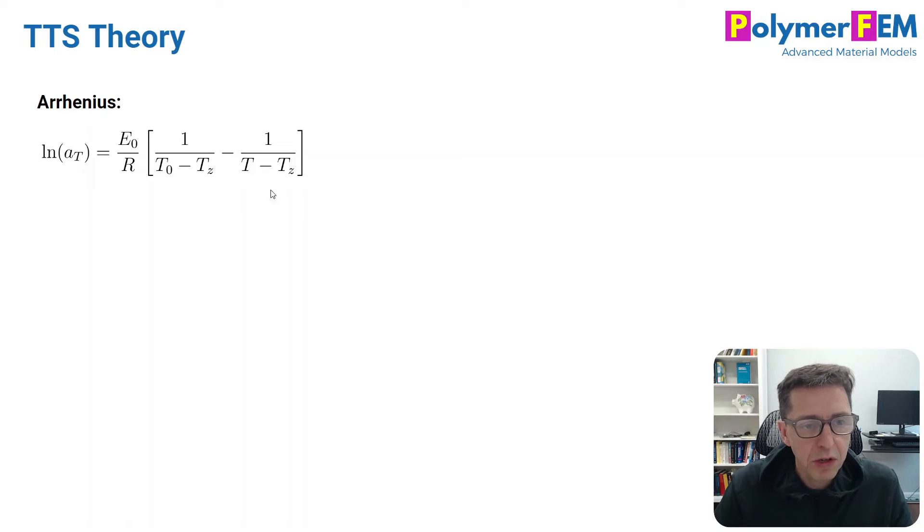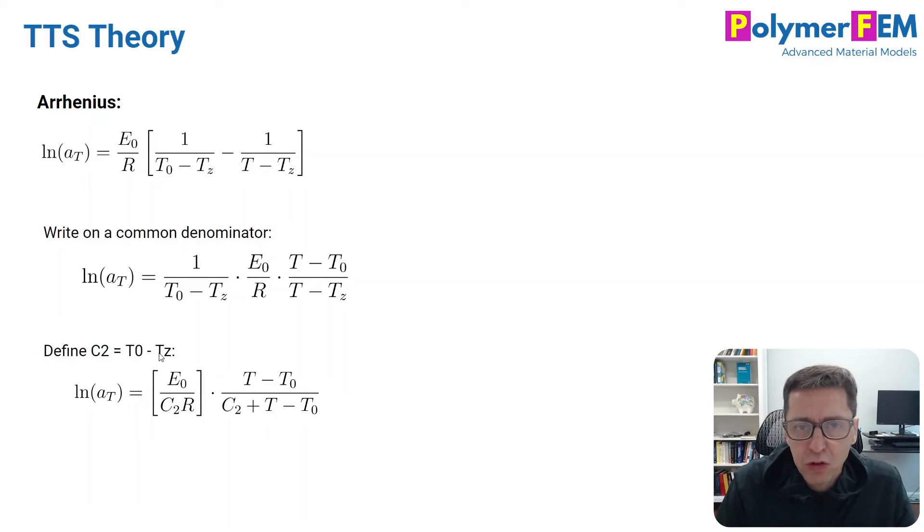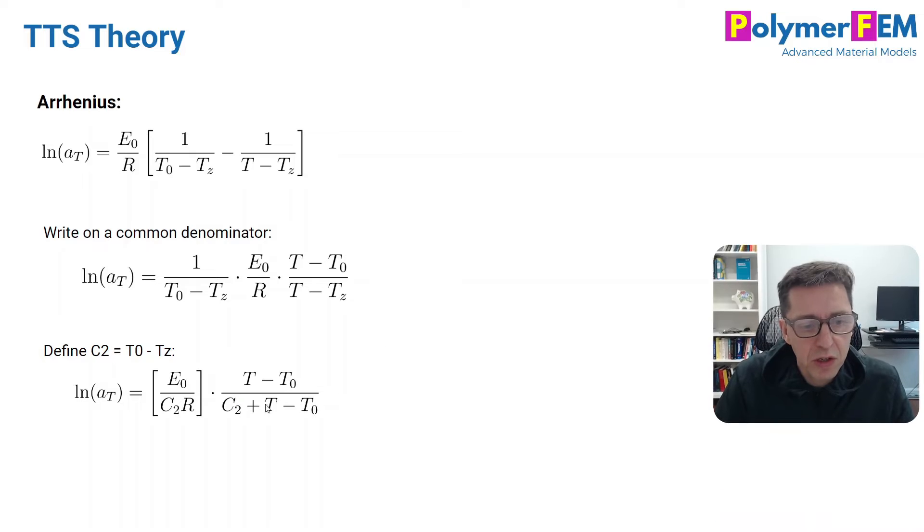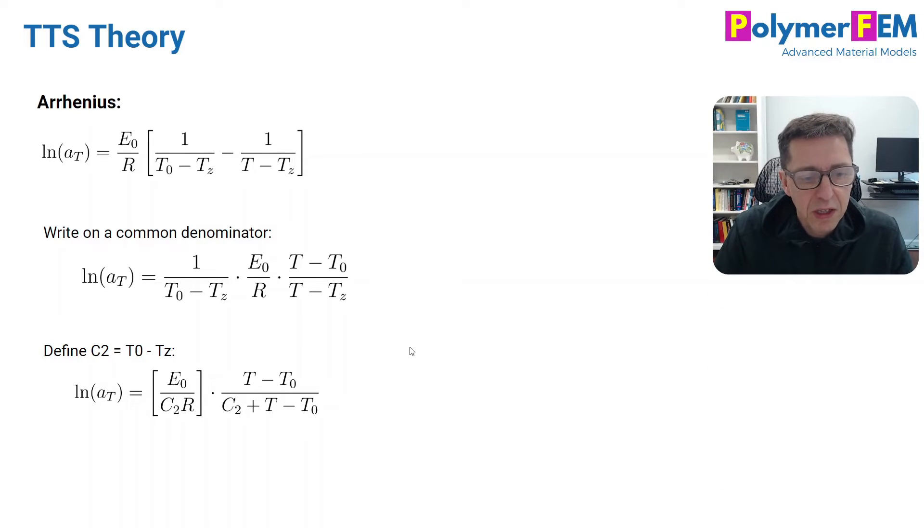So let's start with the Arrhenius equation, the Abaqus version of it. Here's the equation that I just showed. If I simplify the math a little bit, I write it on a common denominator, I end up with this equation here. I've really done nothing except rewriting it a little bit. Then I introduce another constant, C2. I define that to be equal to T0 minus Tc, this term here. And that allows me to rewrite this original Arrhenius equation in the form shown down here.